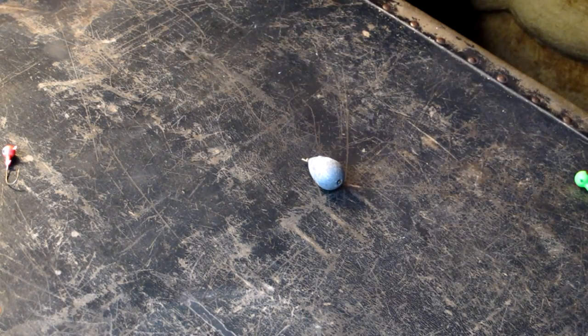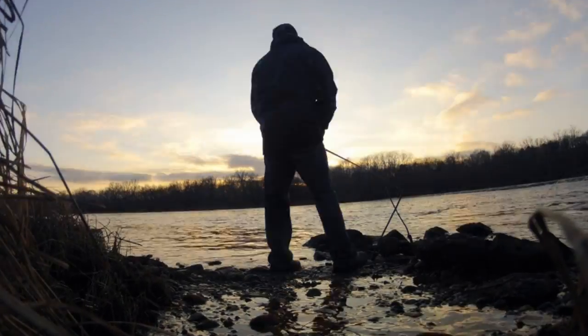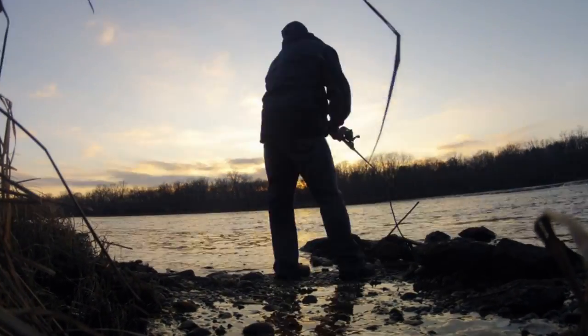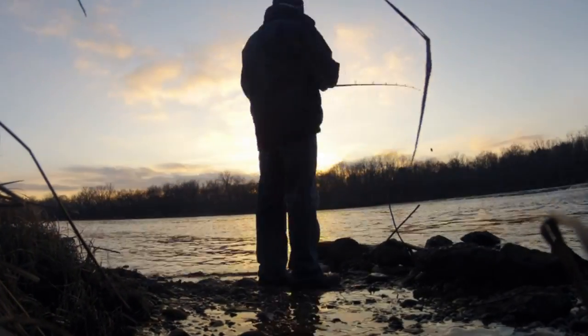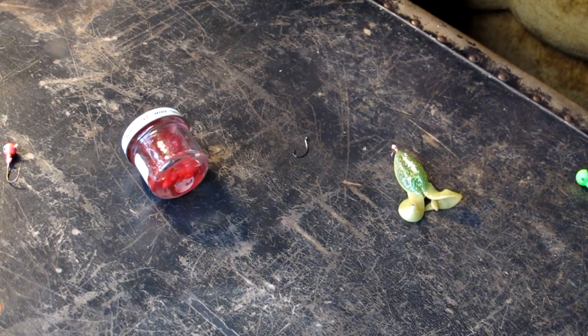The next thing we need is a weight. Now since I'm teaching you guys how to set up a rig for river fishing with somewhat of a current, big river fishing even, you're going to at least want an ounce or two weight. And of course we're going to need a hook and some bait.